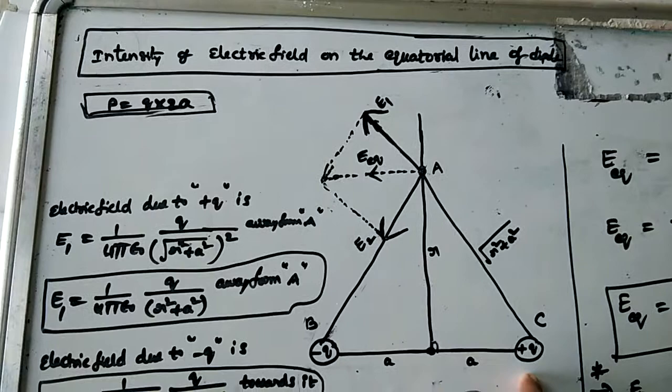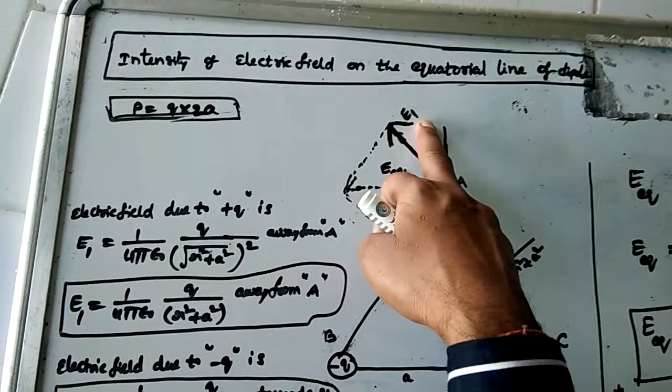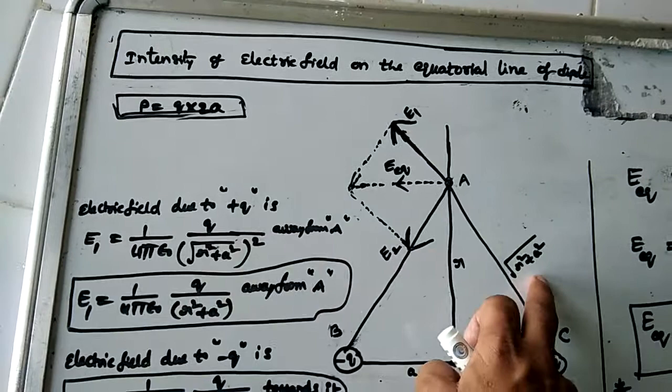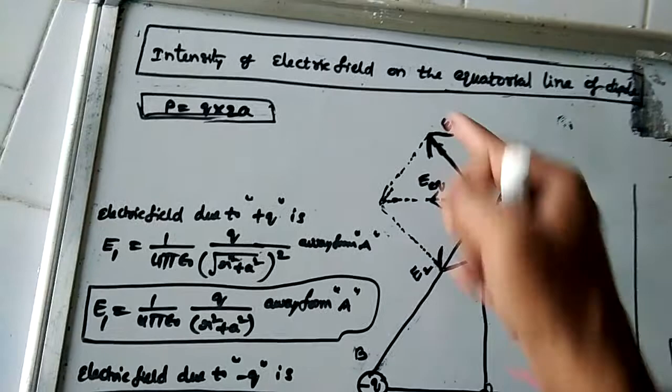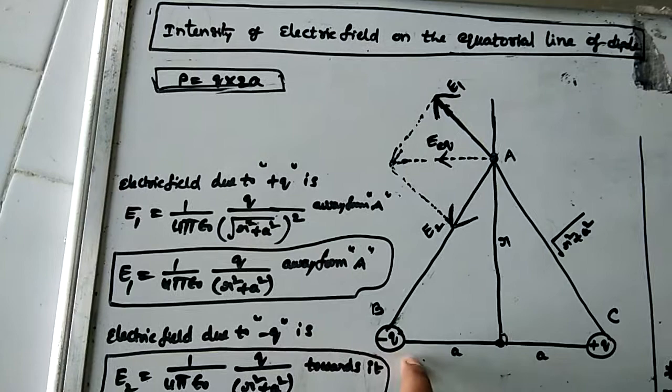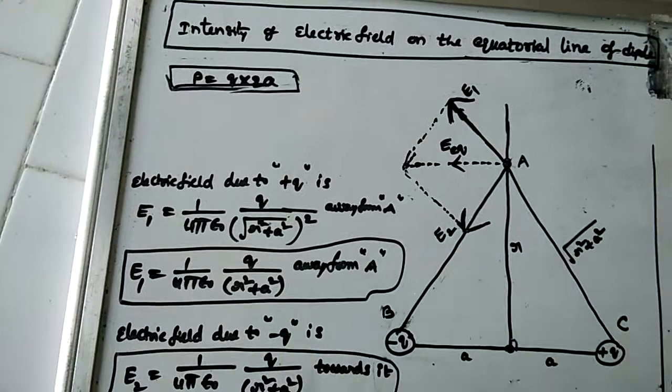At point A, the positive charge gives electric field E1. Since positive charge acts as a point charge, the distance is root of r squared plus a squared, so E1 equals 1 by 4pi epsilon naught times q divided by (r squared plus a squared). The electric field due to a positive charge points away from it. The electric field E2 due to the negative charge has the same magnitude but its direction is towards the negative charge.